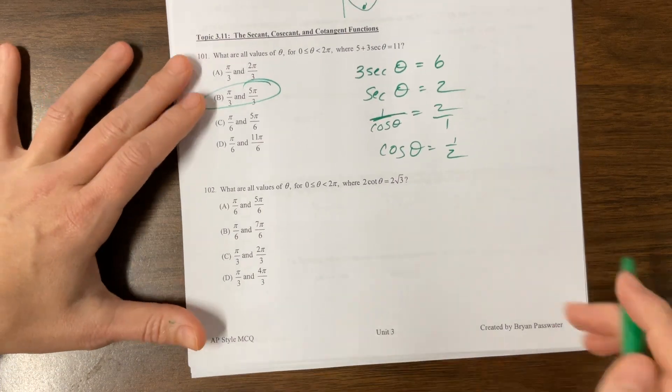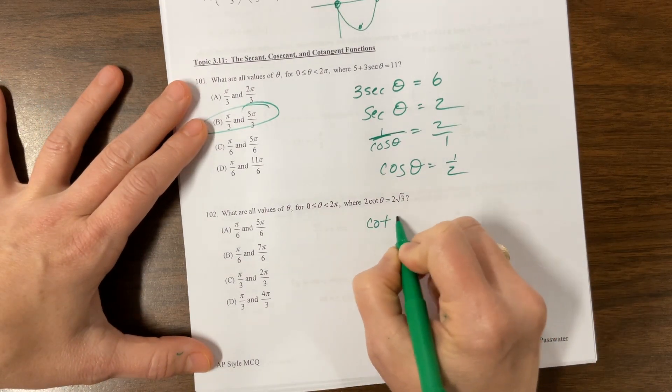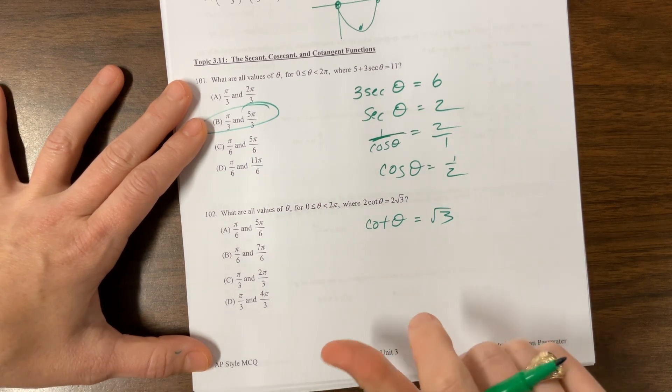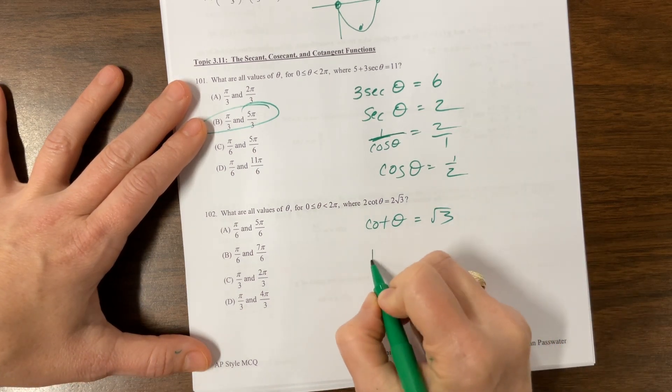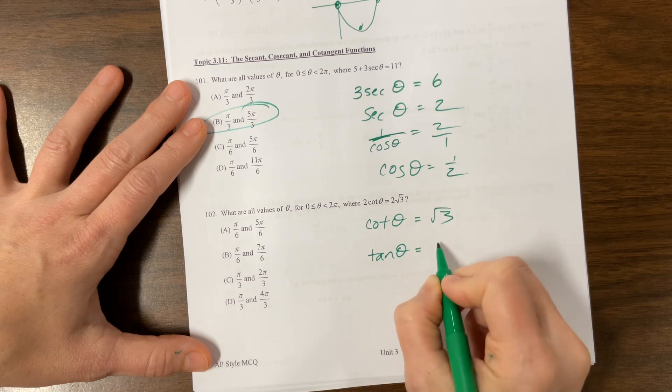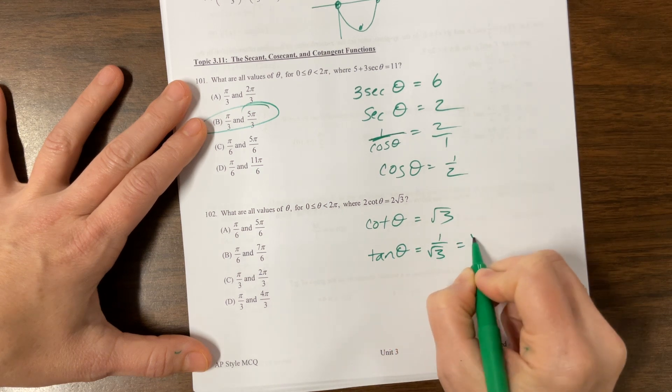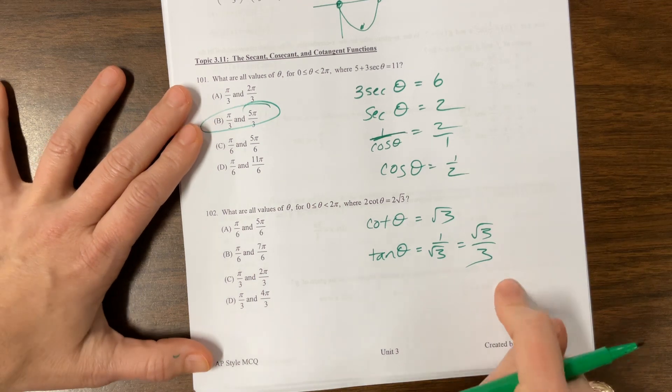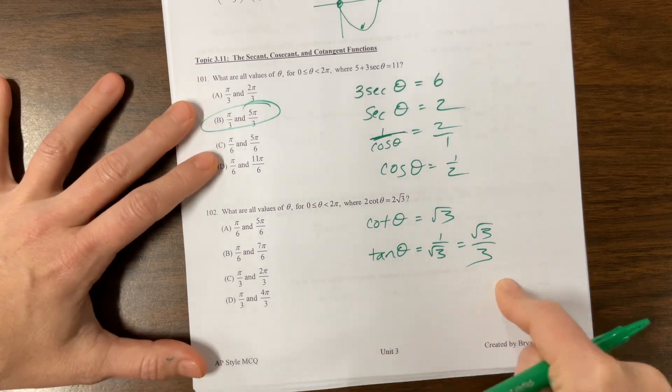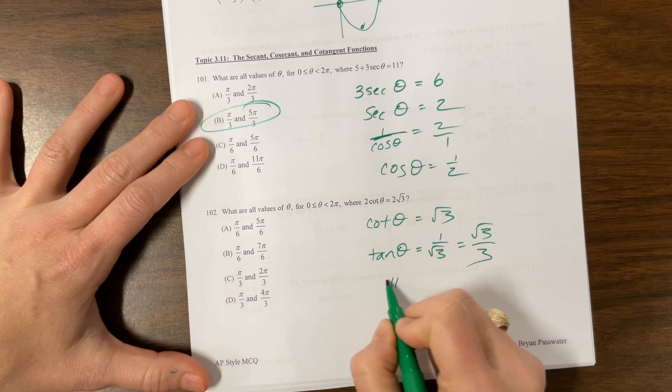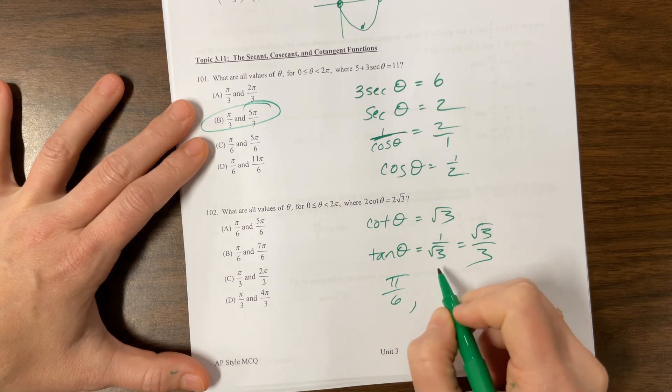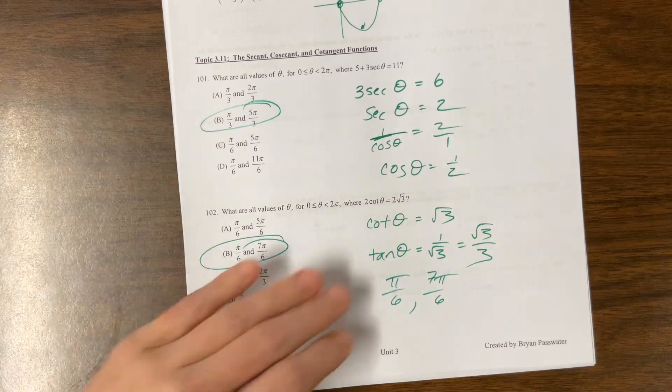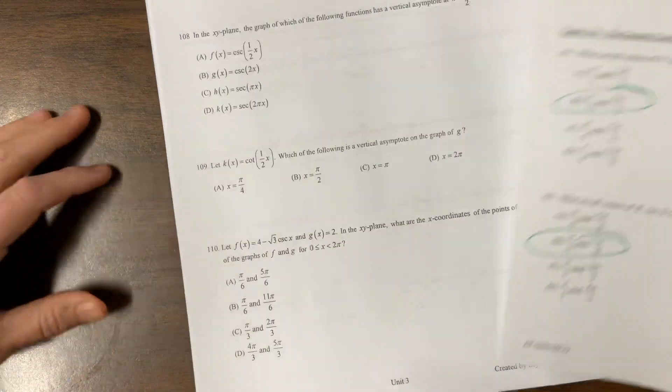A similar idea here. We have cotangent of theta is equal to root 3. Cotangent is tangent's buddy, so it's the reciprocal of tangent. So tangent is going to be the reciprocal of that, which is root 3 over 3. This is the less steep line. If you don't know what I'm talking about, go watch the very last video I made. This is pi over 6 in quadrant 1 and then 7 pi over 6 in quadrant 3.